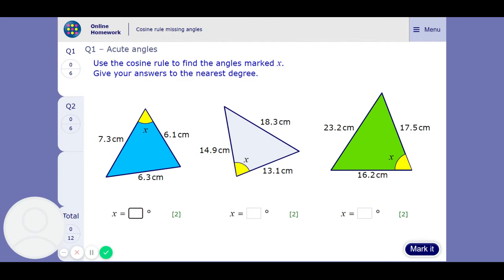So 7.3 squared plus 6.1 squared take away 6.3 squared all over 2 times 7.3 times 6.1 and do the inverse cos and you're going to get to the nearest degree 55 degrees. Do the same thing for this one.